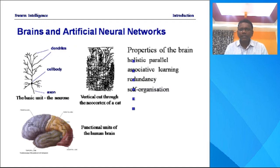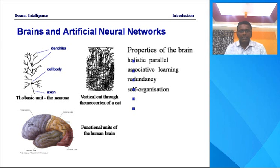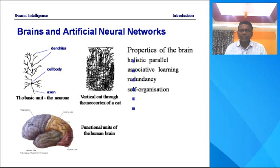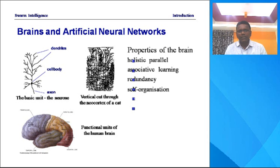Artificial neural networks also play an important role in Swarm Intelligence, because whatever we develop is inspired by nature. In nature, the human brain is central. The human brain has various properties: it is holistic, parallel, uses associative learning, redundancy, and is self-organized. All these properties of the human brain are equally induced in computers or machines — that is why it is called computational intelligence. Artificial neural networks must possess all these properties.